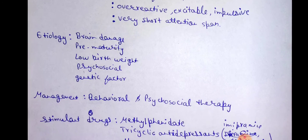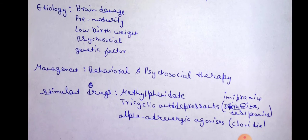The cause and etiology of ADHD includes brain damage, prematurity, low birth weight, psychological factors, and genetic factors.